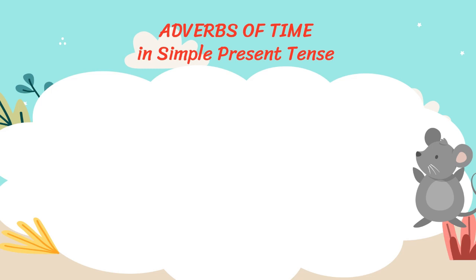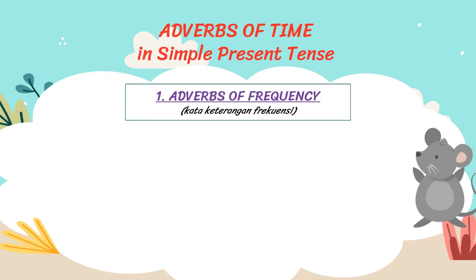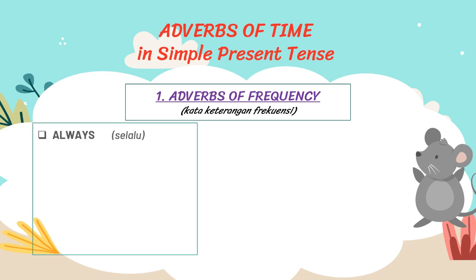Now we will see the adverbs of time in simple present tense. Ada beberapa kata keterangan waktu yang biasanya menunjukkan bahwa kalimat itu adalah kalimat simple present tense. First, we use adverbs of frequency. Kata keterangan frekuensi biasanya dipakai untuk menjelaskan tentang habit, kebiasaan. It can be always, usually, often.